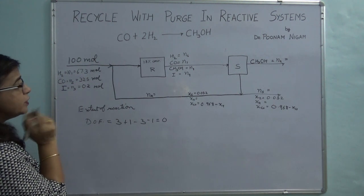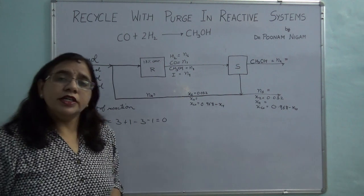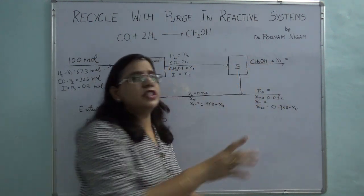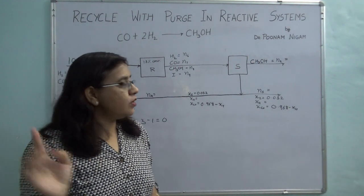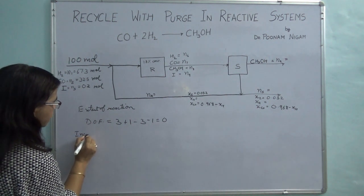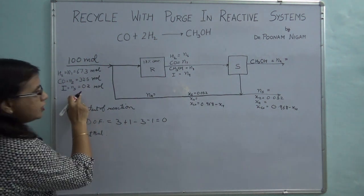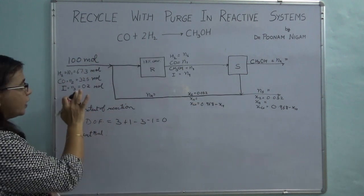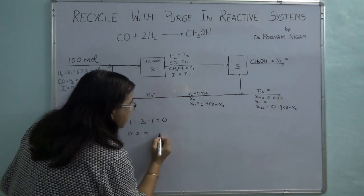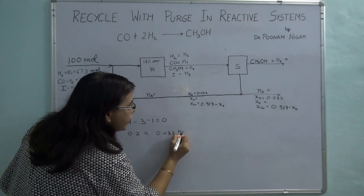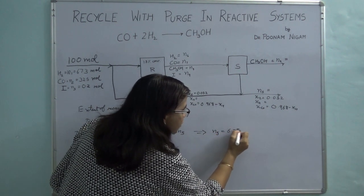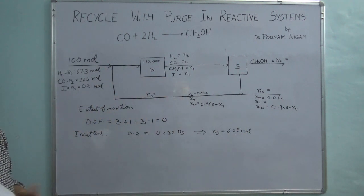When a process specification is given, try to use it first. Here, we start with the inert balance. Whatever inert goes in must come out at steady state: 0.2 = 0.032 × N5. This single equation solves to give N5 = 6.25 moles.